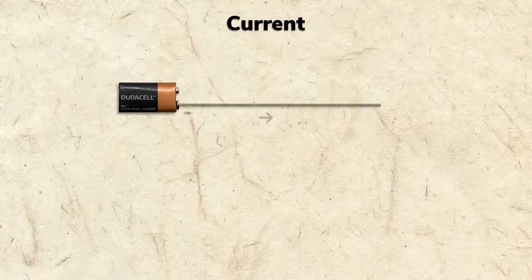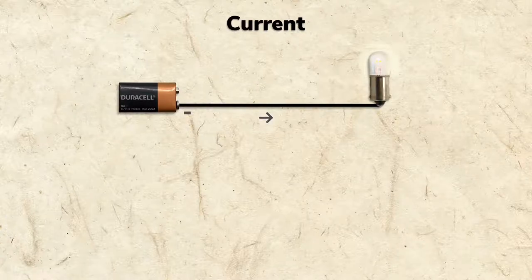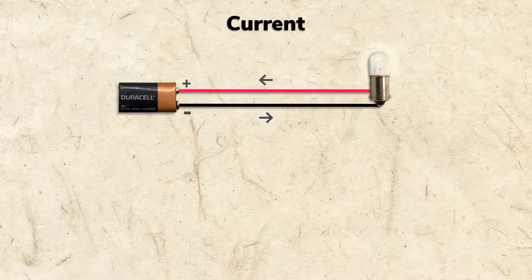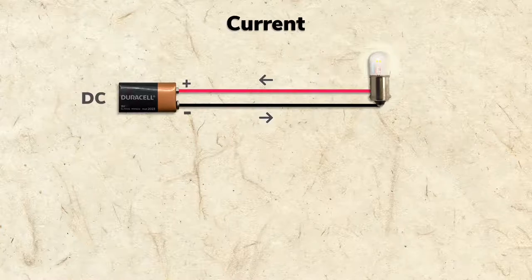When current flows from a battery, it leaves the negative terminal, passes through a component such as a bulb, and returns to the positive terminal. This is called DC or direct current because current always flows in one direction.